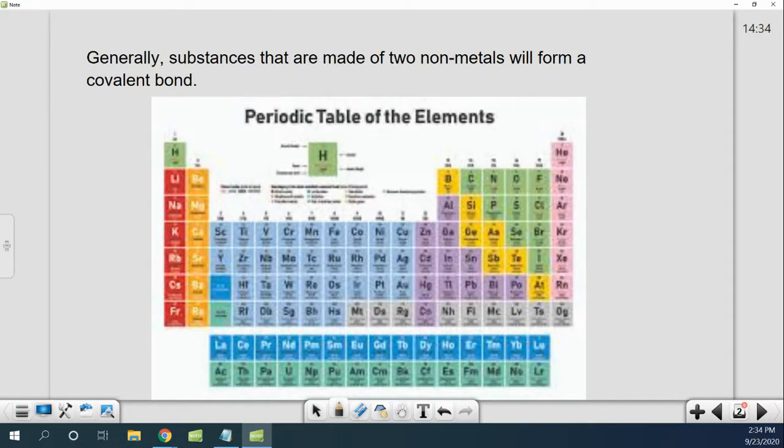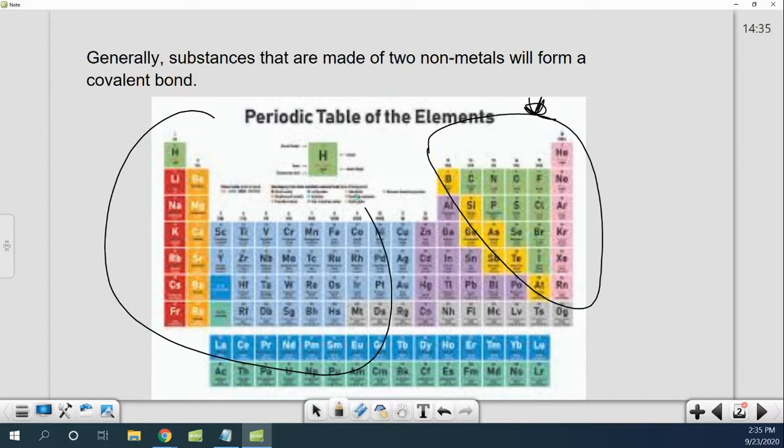Generally substances that are made of two non-metals will form a covalent bond. So we're looking over on this side of the periodic table here. Basically if you got two things on this end of the table you're ending up with a covalent bond. If you have anything from over here it's going to be ionic instead.